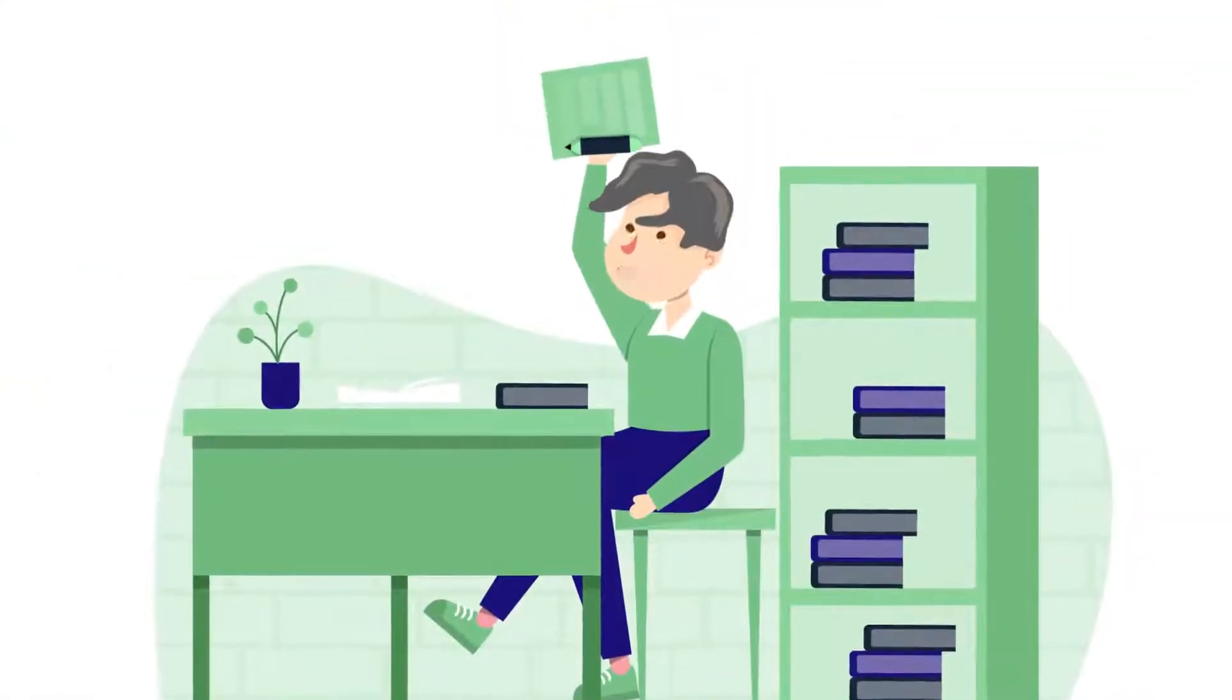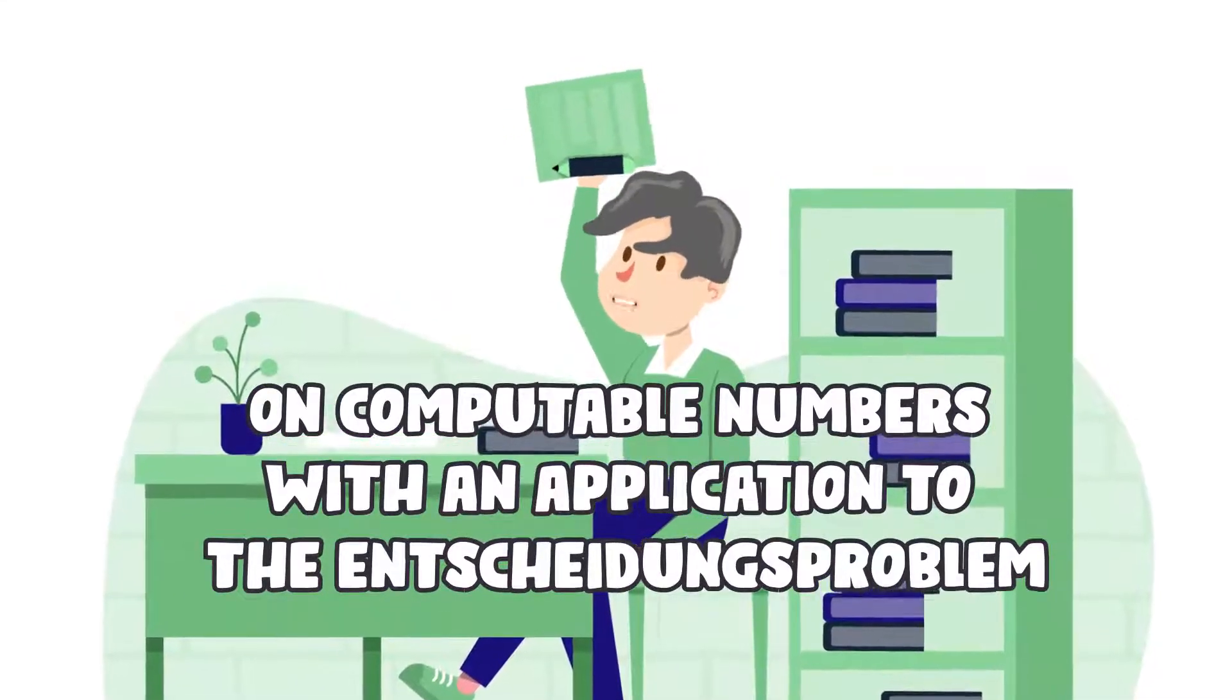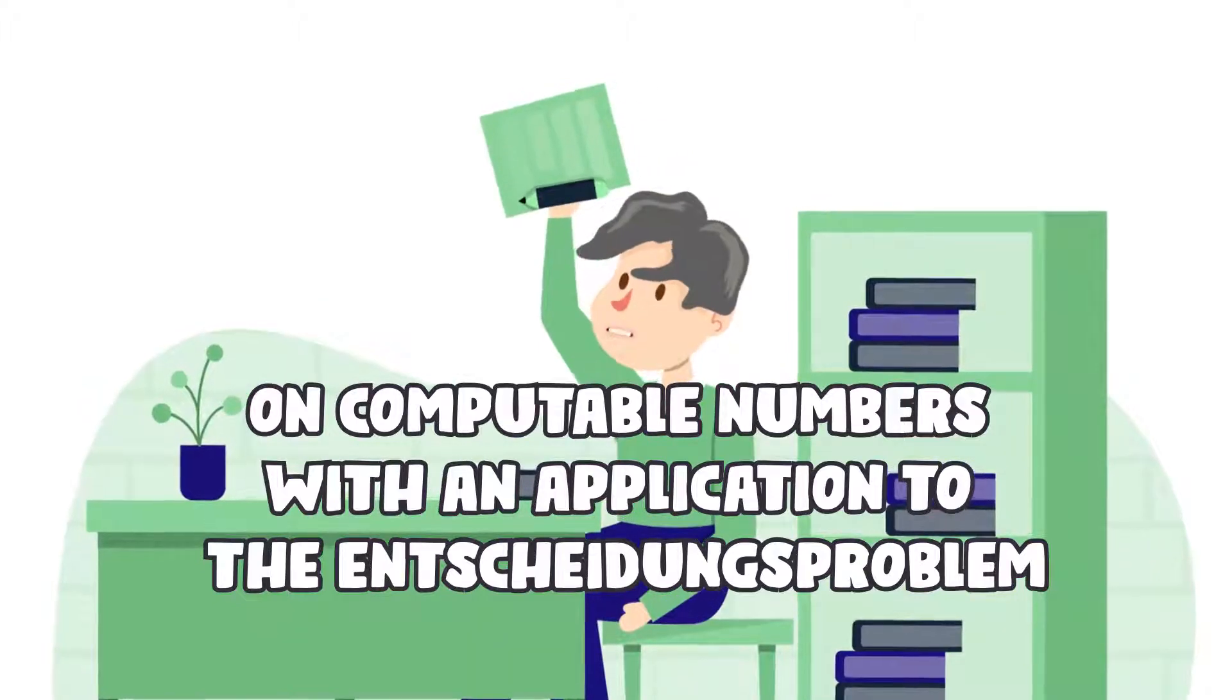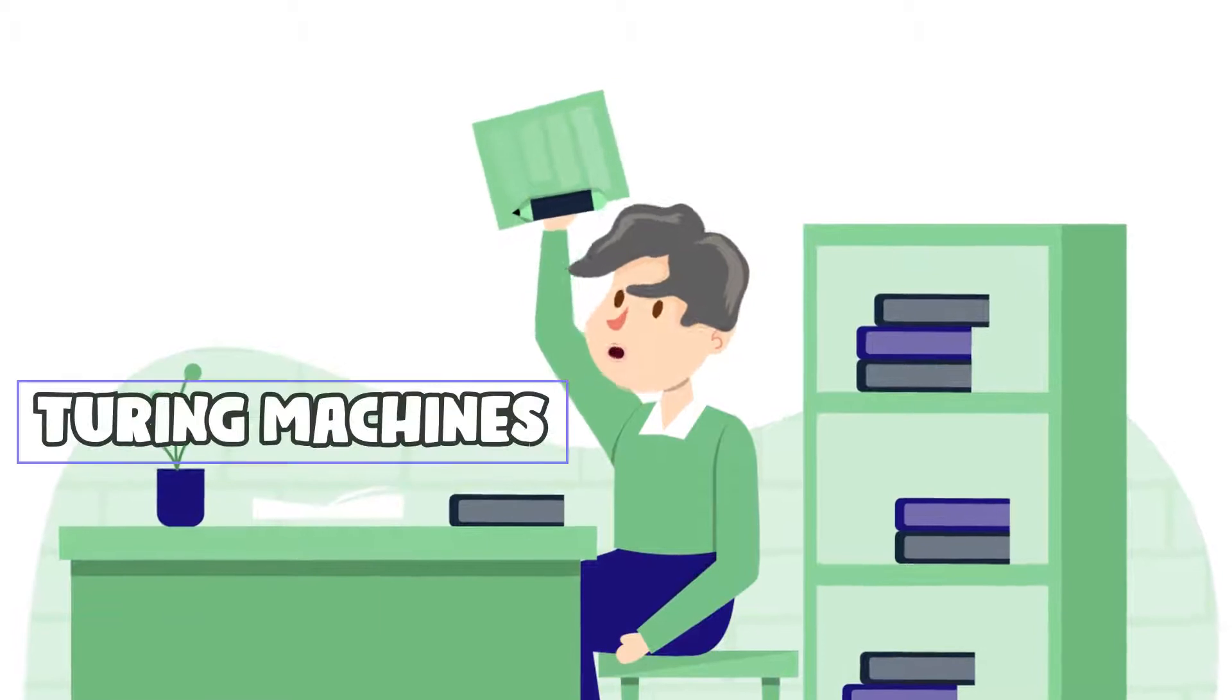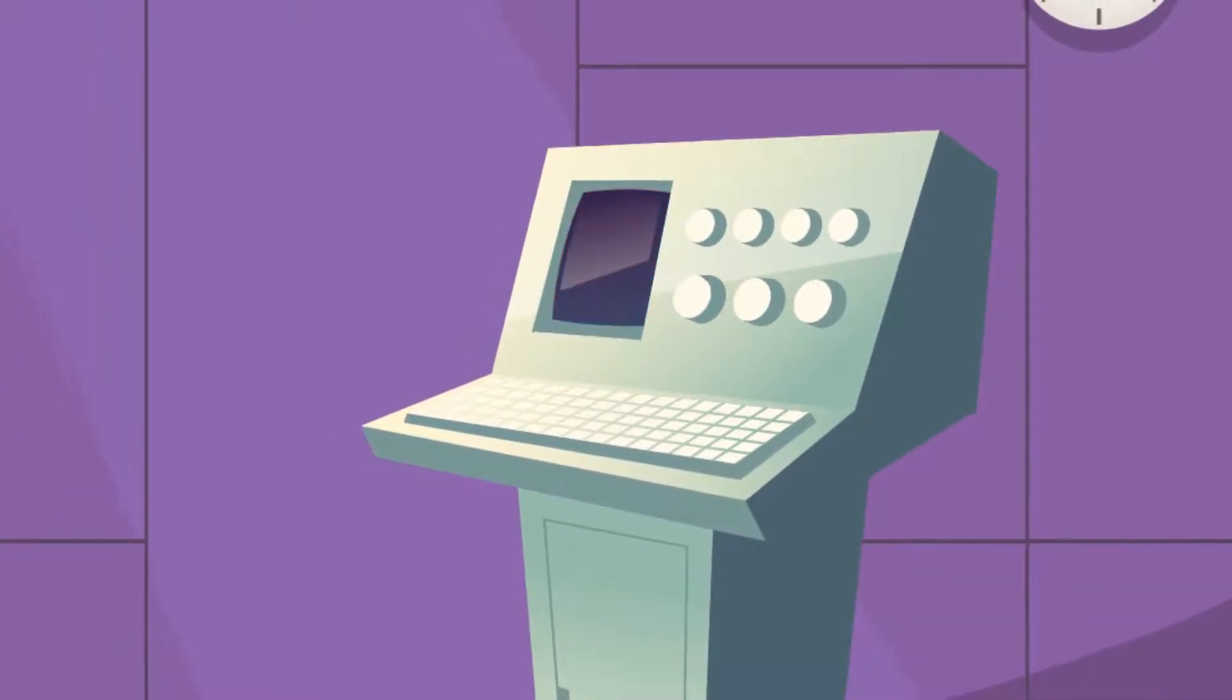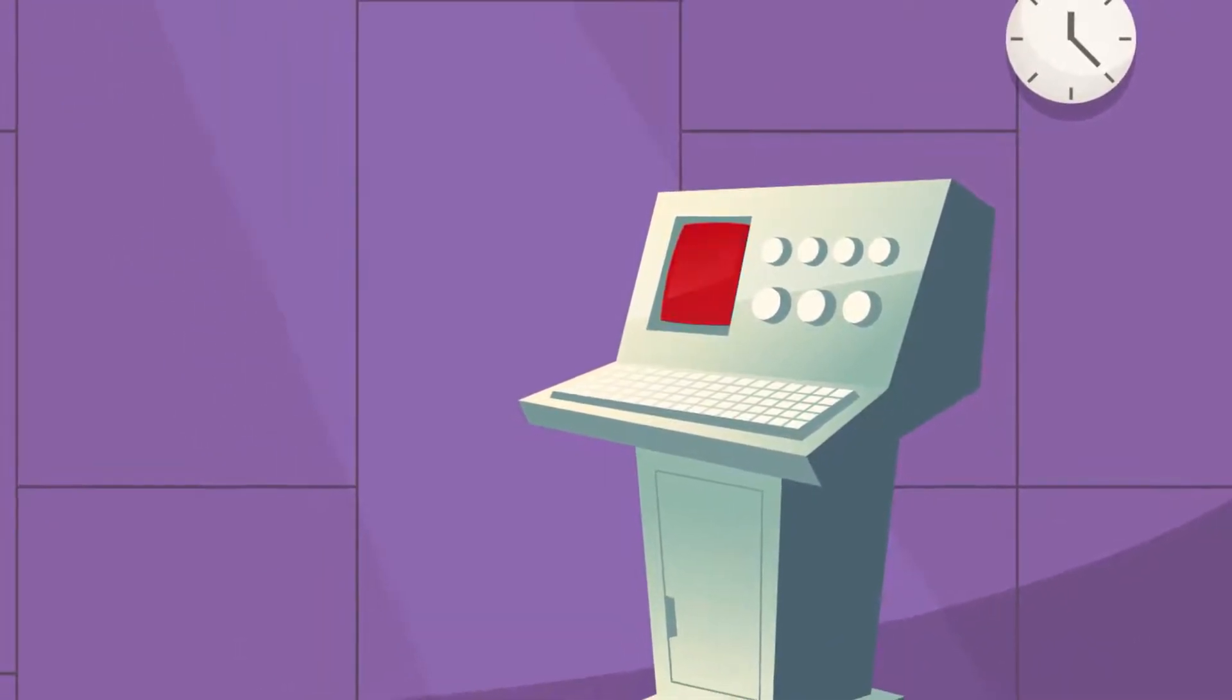The next year, Alan had his first publication of his paper on computable numbers with an application to the Entscheidungsproblem and reformulated Kurt Gödel's result on the proof of computation limits. He created his own formal and simple hypothetical devices to replace that of Gödel, which became known as Turing machines. The machines were capable of computing anything on computation and were a central object of study in the theory of computation.